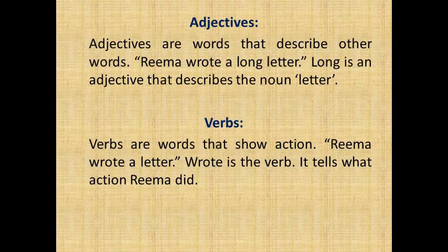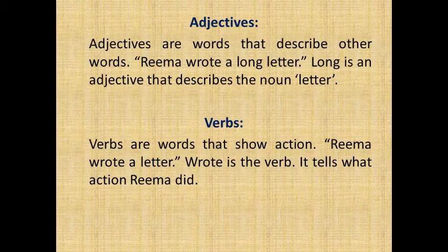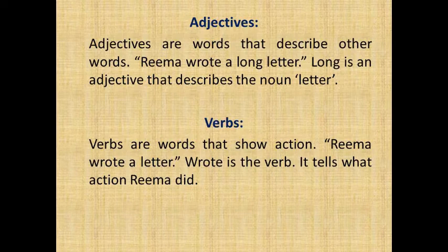Adjectives are words that describe other words. For example: 'Rima wrote a long letter' — 'long' is an adjective that describes the noun 'letter'. Verbs are words that show actions. For example: 'Rima wrote a letter' — 'wrote' is a verb; it tells what action Rima did.